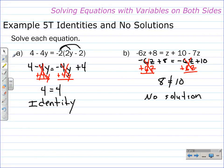Back to example A, or part A of example 5T, the identity means that all numbers are a solution.